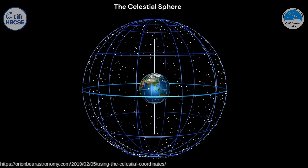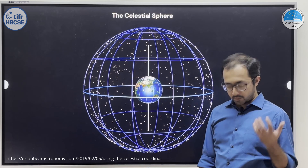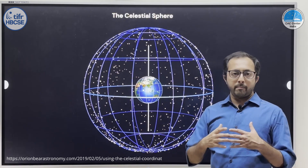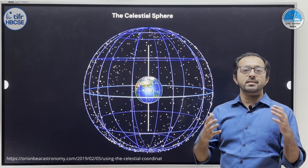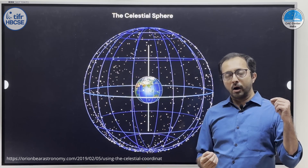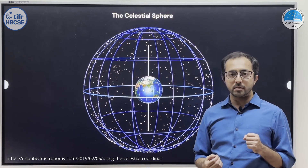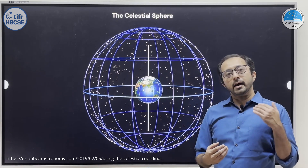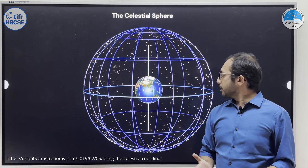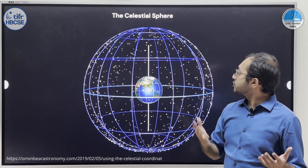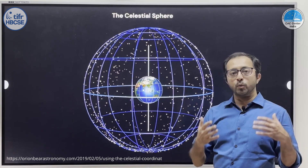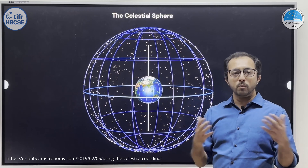Now let us look at earth, which appears to be inside a sphere called as the celestial sphere. The celestial sphere is an imaginary, transparent sphere of practically infinite radius on which all the stars appear to be embedded. All the stars in the sky appear as point sources to us and we cannot perceive the linear distance of these stars from the earth. Hence, we think they are embedded on this huge sphere around the earth. So, a celestial sphere is an imaginary transparent sphere around earth on which all the stars appear to be embedded and on which the planets, the sun, and the moon appear to move.